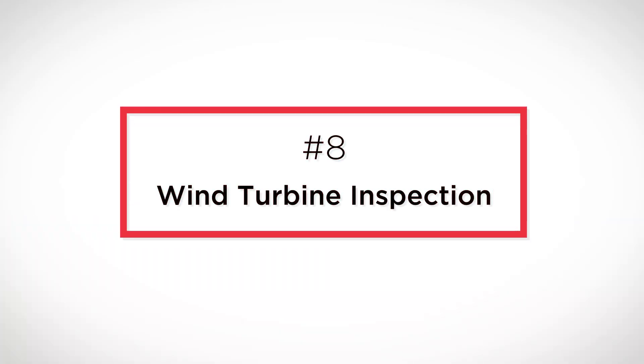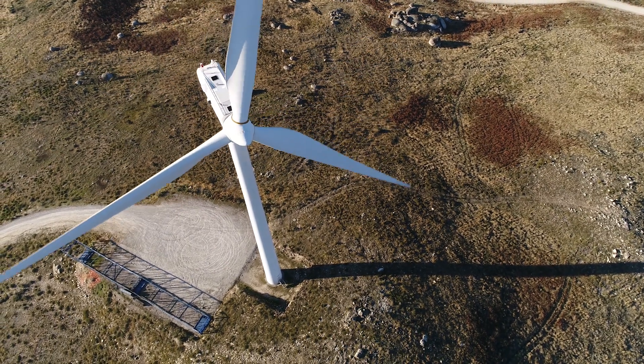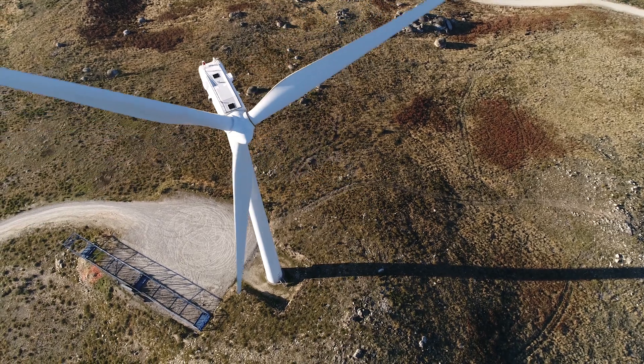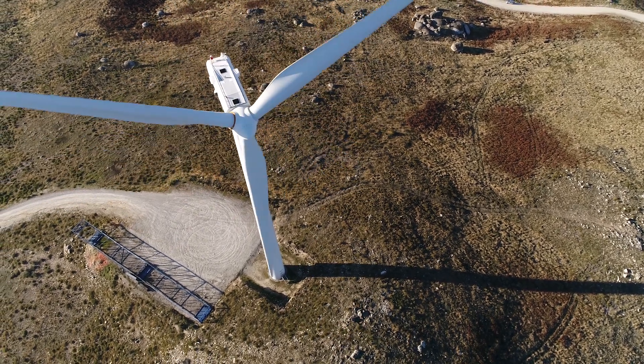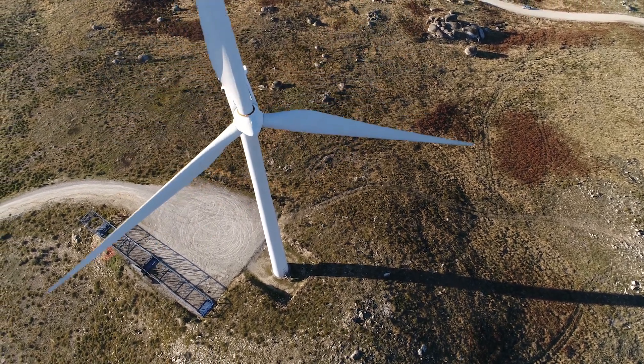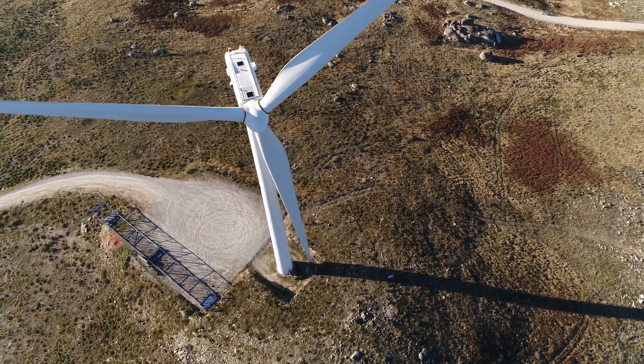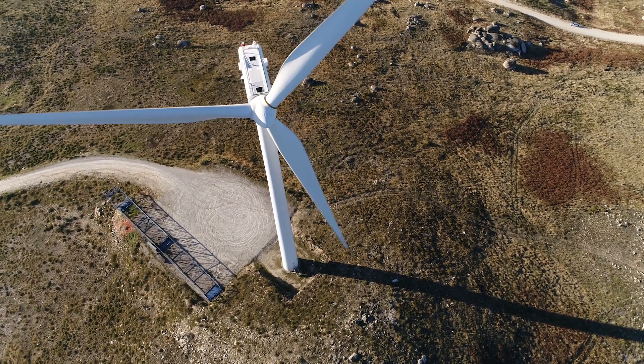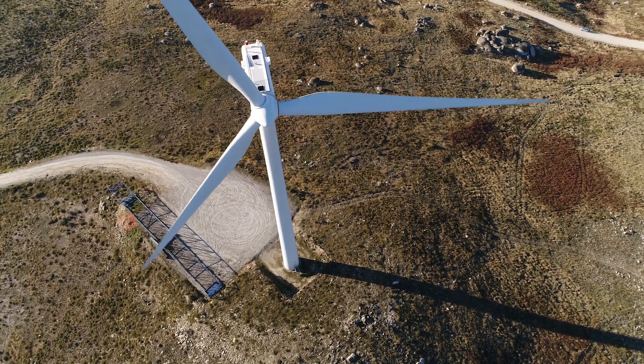And number eight: wind turbine inspection. LiDAR-equipped drones can be used to inspect wind turbines, identifying blade defects, structural issues, and other potential problems. This can lead to more effective maintenance and increased energy production. Overall, drone LiDAR technology offers utilities a cost-effective, efficient, and safe method for inspecting and managing their infrastructure.